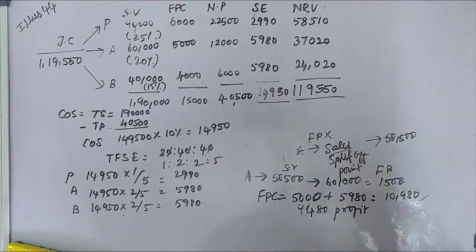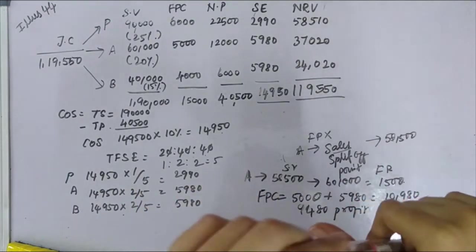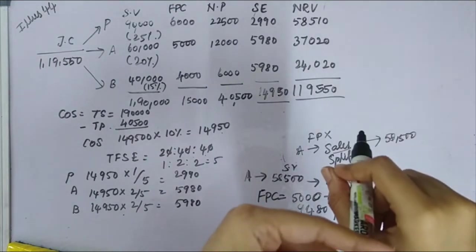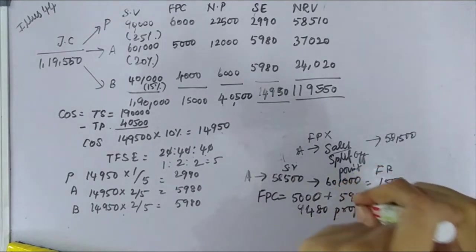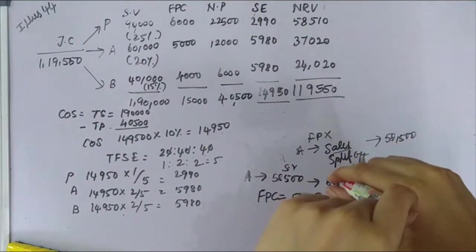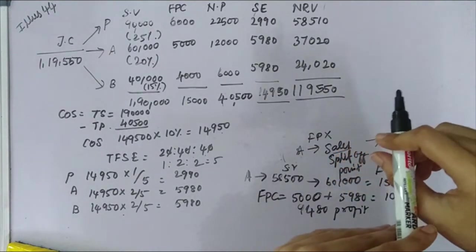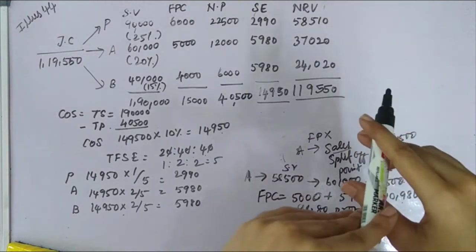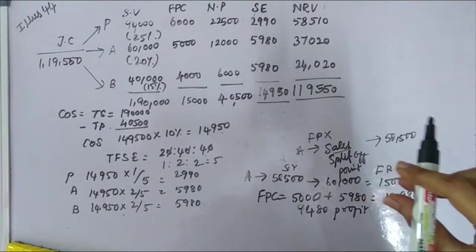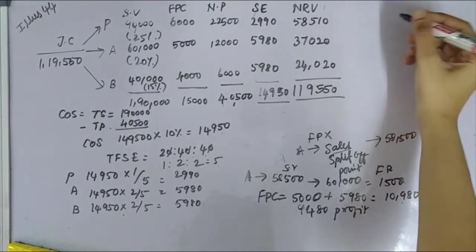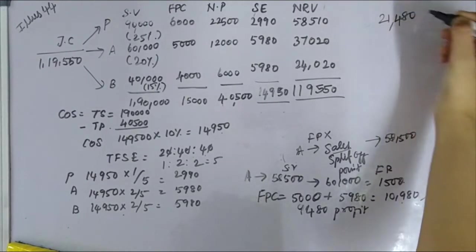If sold at split-off point, the revenue is Rs 58,500. Selling at the split-off point gives more profit of 21,480 compared to profit after further processing of 12,000. Therefore, it is advisable to sell by-product A at the split-off point.